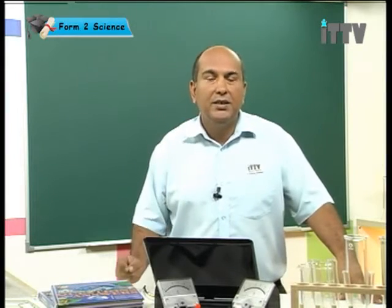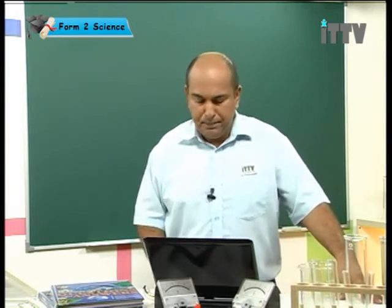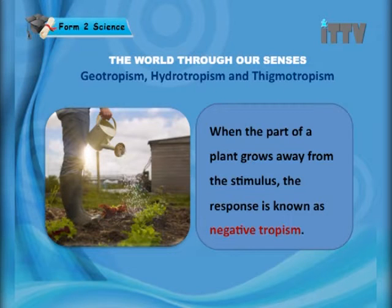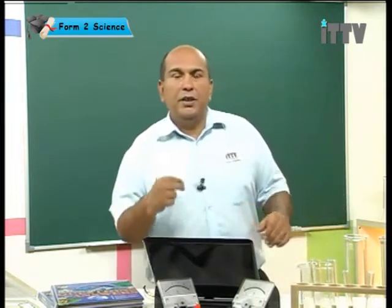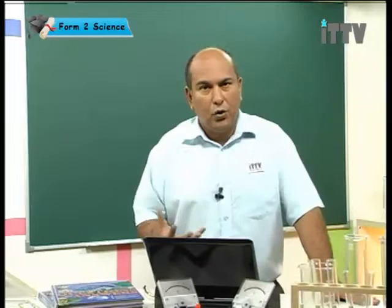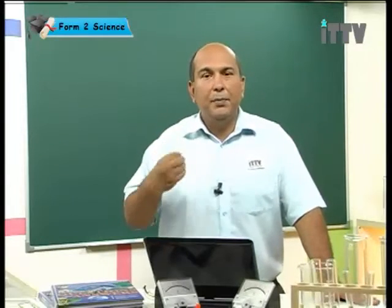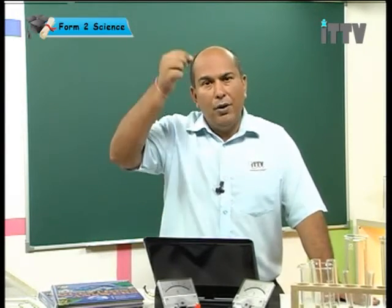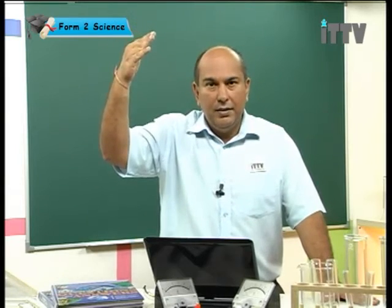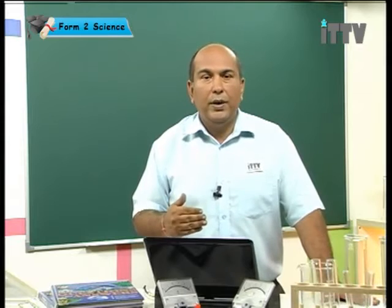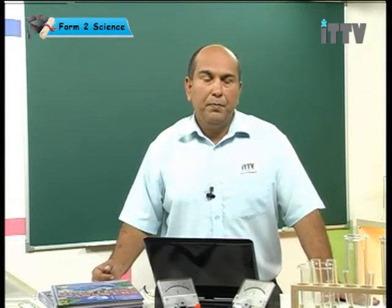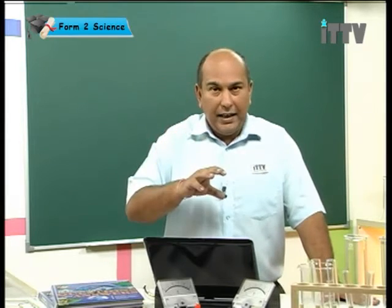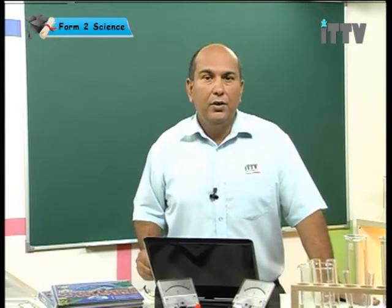When you grow towards the stimulus, it is a positive tropism. When the part of a plant grows away from the stimulus, the response is known as negative tropism. The shoot is growing away from the water which is in the soil — we say the shoot is exhibiting negative hydrotropism. On the other hand, the root is growing downwards away from the sunlight, so the root is showing negative phototropism. Any growth away from a stimulus is known as a negative tropism.